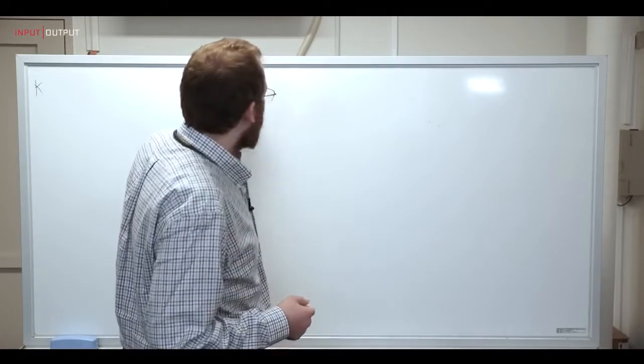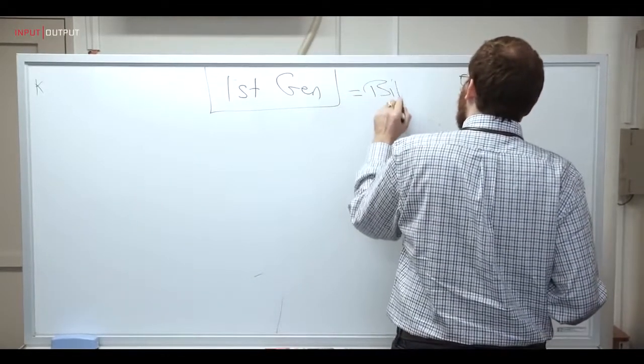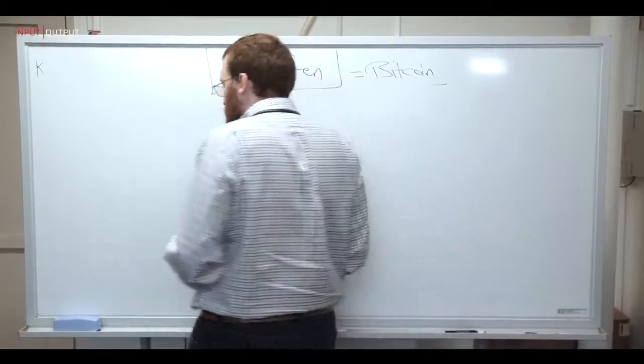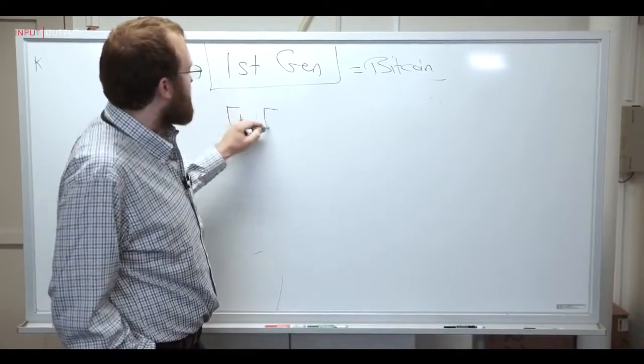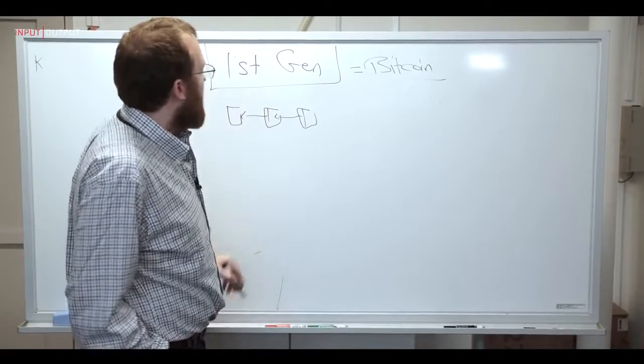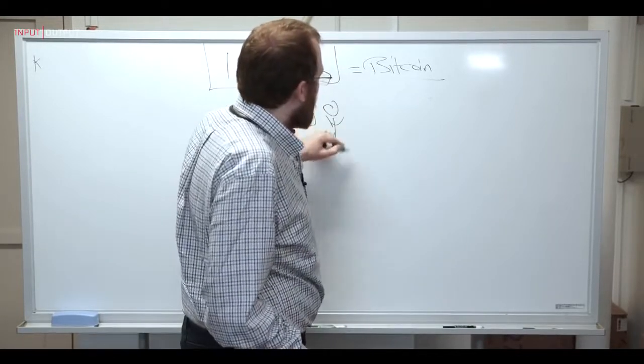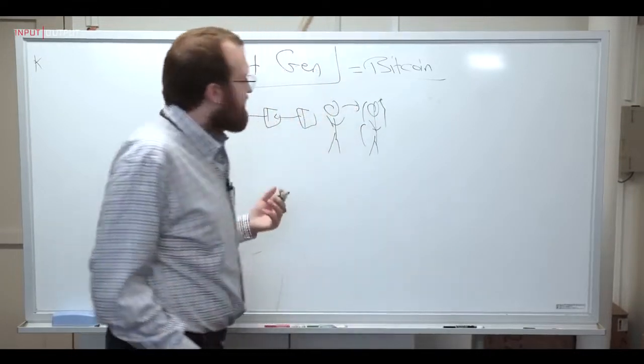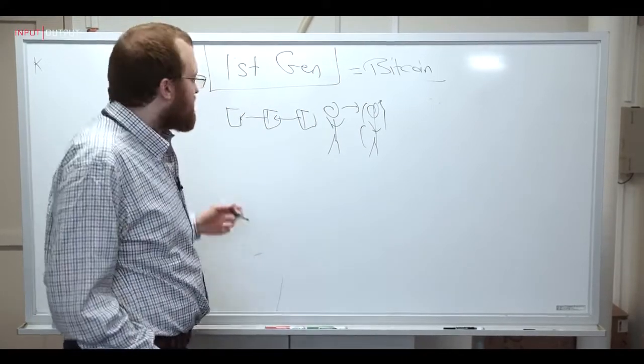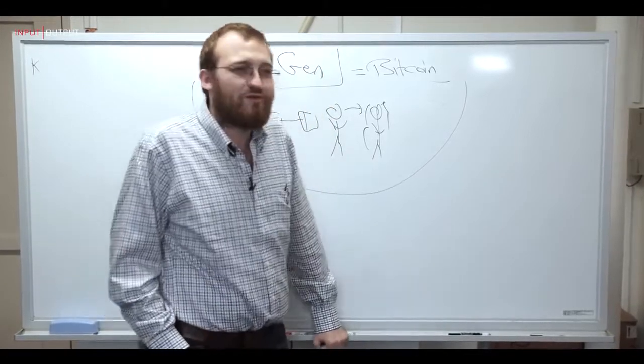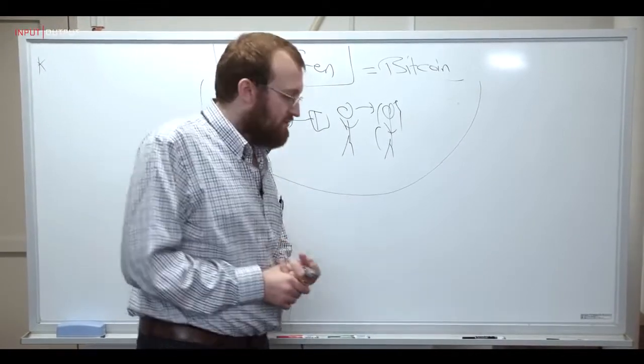So let's talk about the first generation of cryptocurrencies. So first gen is Bitcoin, and the problem that Bitcoin was trying to solve was really could we create a decentralized money? Could we create some sort of token that lives on some sort of decentralized blockchain maintained by people all around the world, and that token would be scarce and tradable. So when Alice and Bob want to send value to each other, there would be a mechanism for doing that that did not require a trusted third party, a trusted intermediary.